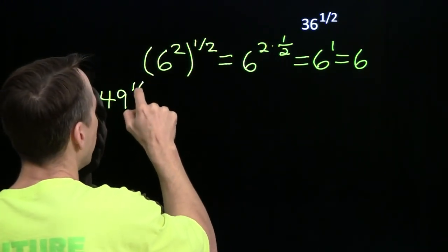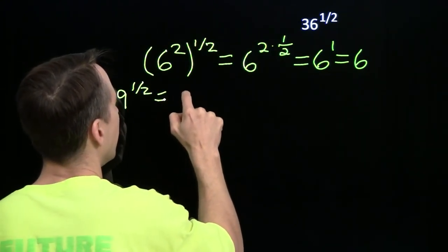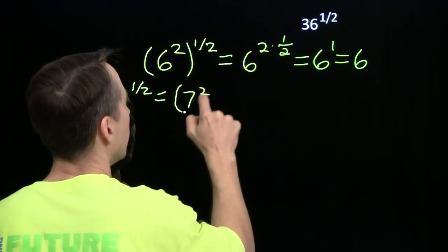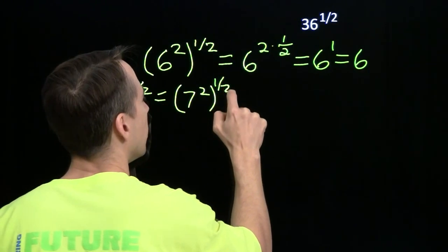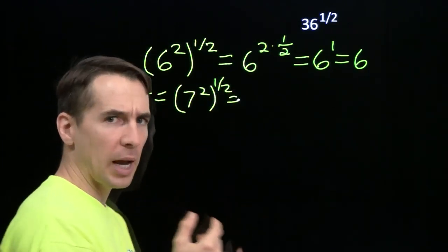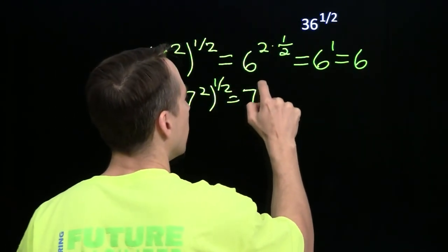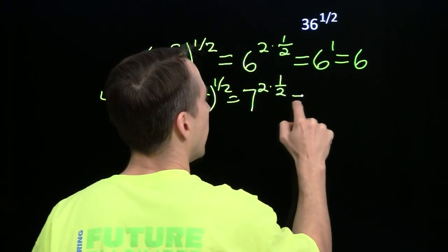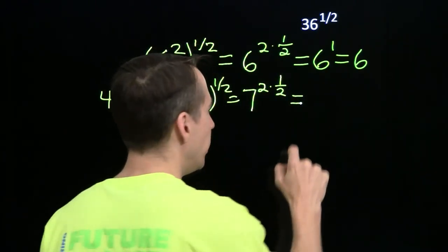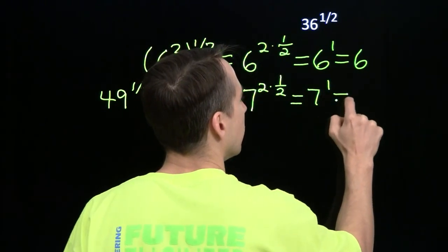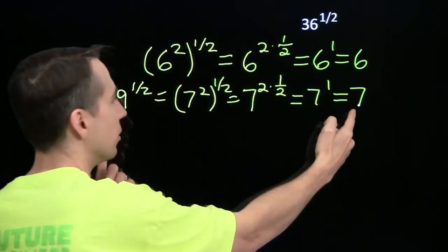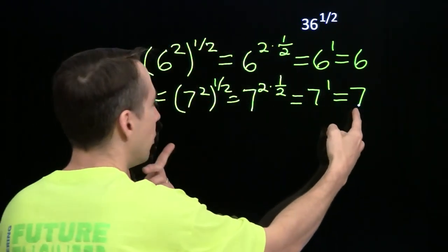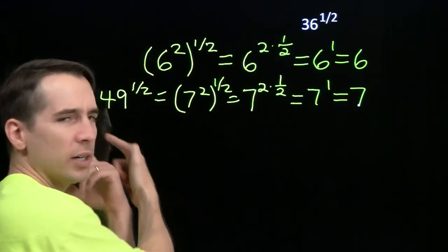We'll try 49 to the 1 half. Of course, 49 is just 7 squared. That's raised to the 1 half power. And again, we'll use that power of a power exponent rule. It gives us 7 to the 2 times 1 half. 2 times 1 half, that's 7 to the 1, which of course is just 7. Once again, we get 7 is the number we squared to get 49.